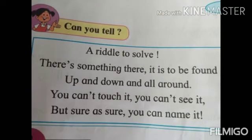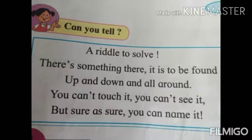Now students, there is a small riddle for you to solve. You have to guess the right answer. There is something there. It is to be found up and down and all around. You can't touch it. You can't see it. But sure, you can name it. Come on children, you have to guess the right answer. The answer is air. You have guessed it right.